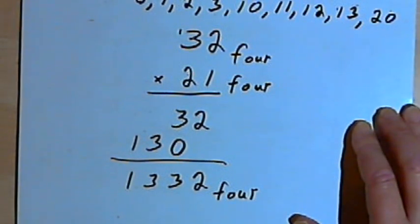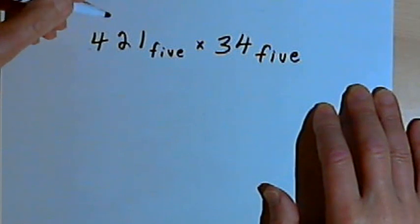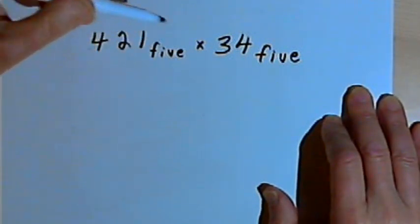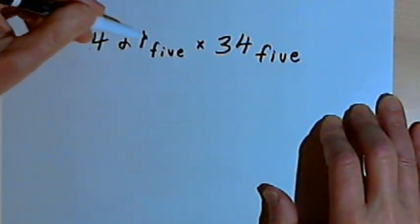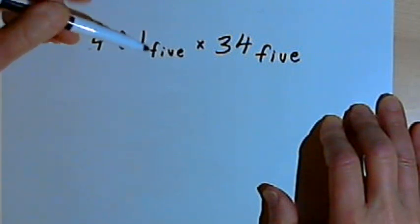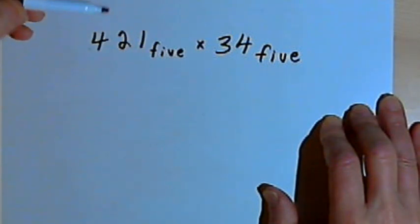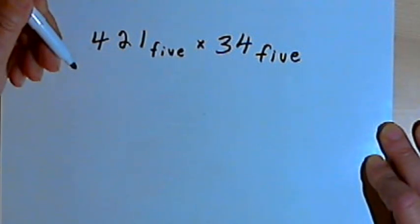Now let's do a harder one and see how we deal with that. So here I'm in base 5, and I've got 421 in base 5 multiplied by 34 in base 5. This could get hard. I've got a 3-digit number and a 2-digit number. The higher the base, the larger the base, the more difficult some of the problem might be.